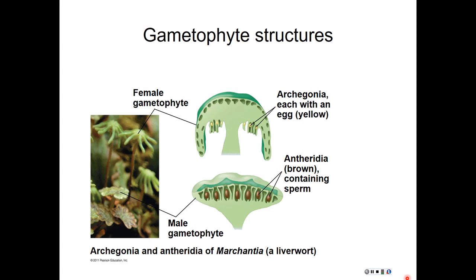Here we're looking at a liverwort, and here are our archegonia — this kind of vase-shaped structure — within which an egg is produced. Here is the male gametangium, the antheridia, with this club shape containing numerous sperm. In this particular liverwort genus Marchantia, we actually have separate male and female gametophytes with slightly different shapes, which is not particularly uncommon in early nonvascular land plants.